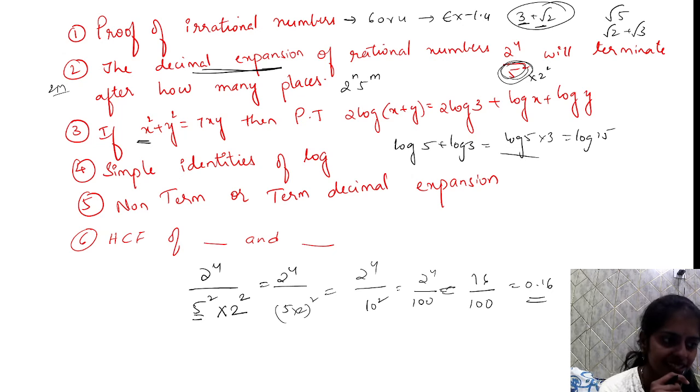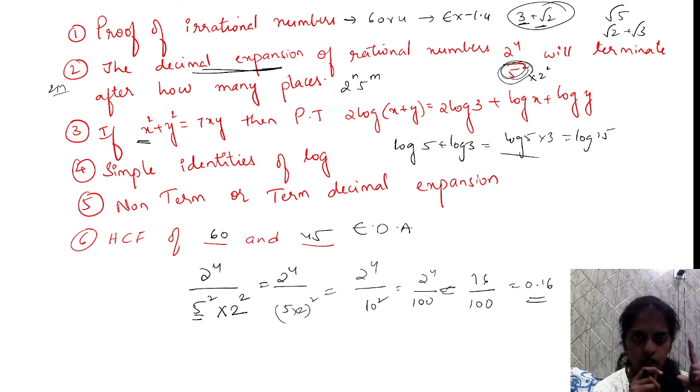The last question is HCF of 2 numbers. HCF of 63 and 45 using Euclid's division algorithm. If you are asked this question, you have the algorithm. Then you have proof of irrational numbers.